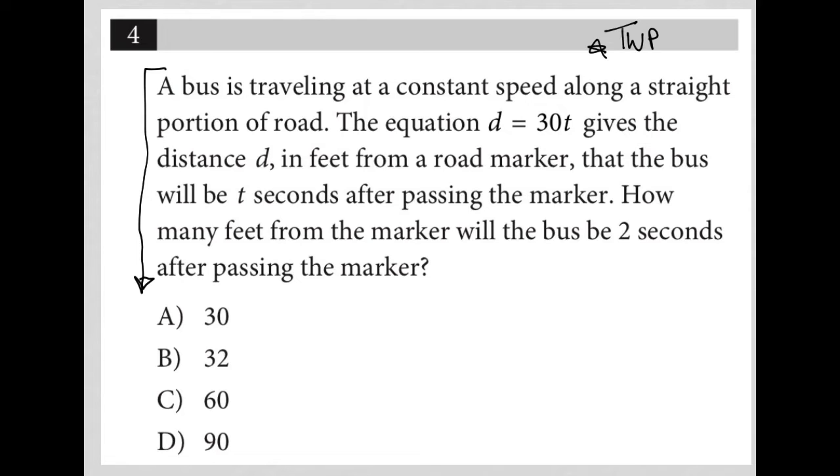So the first sentence here says a bus is traveling at a constant speed along a straight portion of road. Completely makes sense to me. The equation d = 30t gives the distance d in feet from a road marker that the bus will be t seconds after passing the marker.